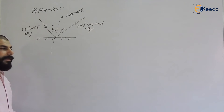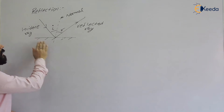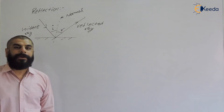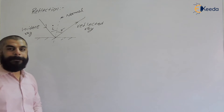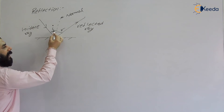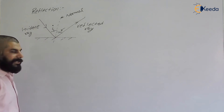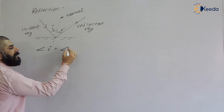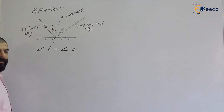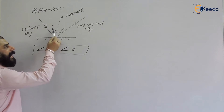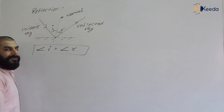There are two laws of reflection. The first law says that the incident ray, the normal, and the reflected ray all lie in the same plane. The second law says that the angle of incidence is equal to the angle of reflection. This is important: angle of incidence equals angle of reflection.